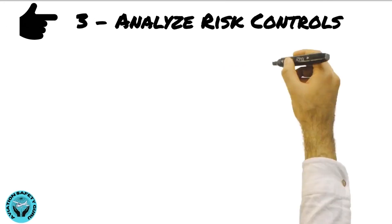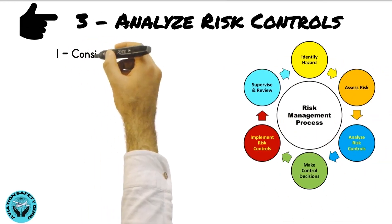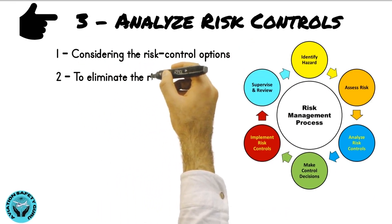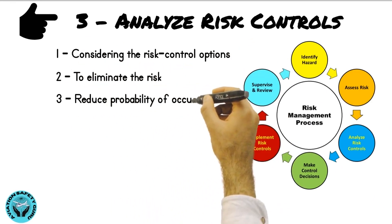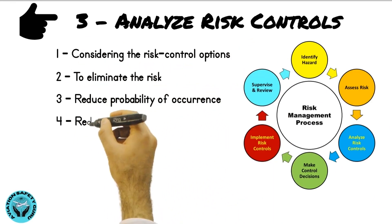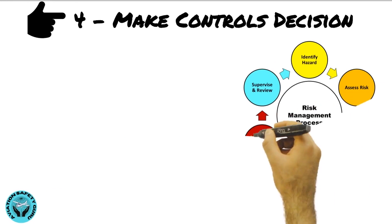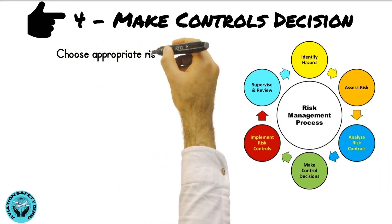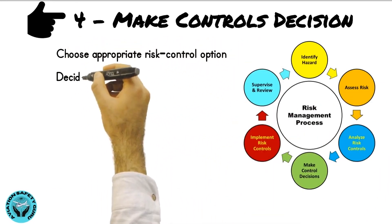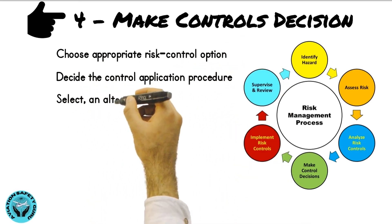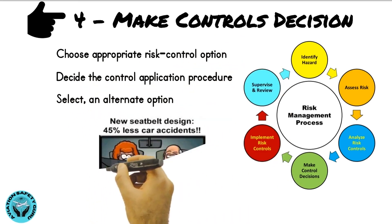Having assessed the risk, analyze the risk controls by considering the risk control options: either to eliminate the risk, reduce the probability of occurrence, or reduce the severity of the loss. At this stage, make a control decision and choose the appropriate risk control option. Decide the control application procedure and also select an alternate option.